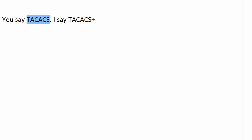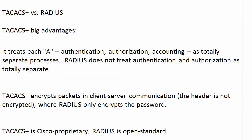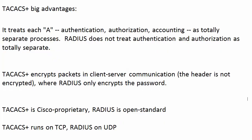Let's go over the differences between TACACS and RADIUS. The big advantage of TACACS Plus is that it treats each of the three A's — authentication, authorization, and accounting — as totally separate processes. RADIUS doesn't do that. Accounting is a separate process in RADIUS, but authentication and authorization are kind of tied together; it's hard to work with one without changing values for the other. TACACS Plus also encrypts packets in client-server communication, with the exception of the header. RADIUS only encrypts the password. TACACS Plus is officially Cisco proprietary; RADIUS is an open standard. TACACS runs on TCP, RADIUS on UDP.